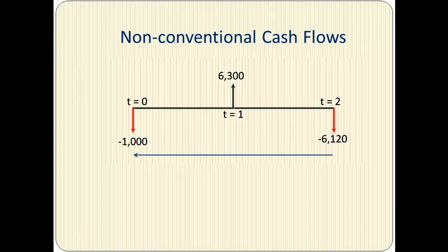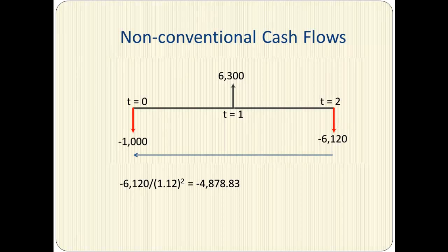In order to find the MIRR on the Student edition of the calculator, we need to find the present value of all the outflows. We are going to find the present value of $6,120. Assuming the investment rate is 12%, the present value turns out to be $4,878.83. This is negative because it is an outflow, and to that we add negative $1,000, giving us a total present value of outflows of $5,878.83.